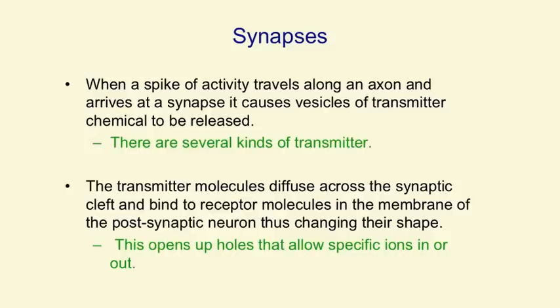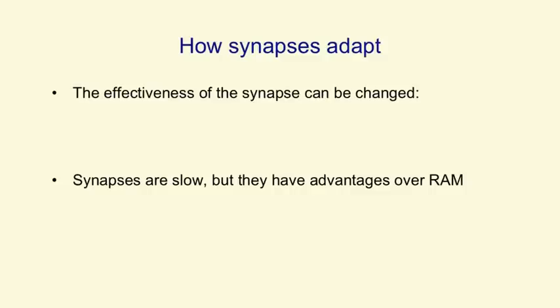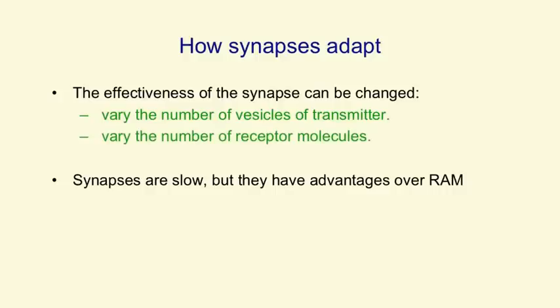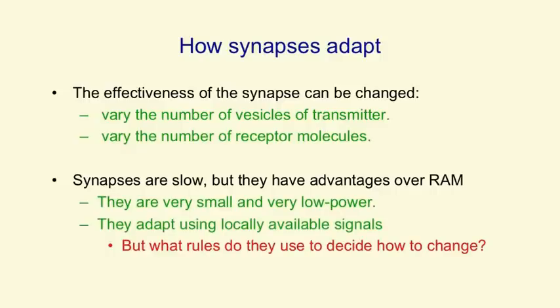Synapses adapt, and that's what most of learning is — changing the effectiveness of a synapse. Synapses can adapt by varying the number of vesicles that get released when a spike arrives, or by varying the number of receptor molecules that are sensitive to the released transmitter molecules. Synapses are very slow compared with computer memory, but they have a lot of advantages: they're very small and very low power, and they can adapt. They use locally available signals to change their strengths, and that's how we learn to perform complicated computations. The issue, of course, is how do they decide how to change their strengths — what are the rules for how they should adapt?